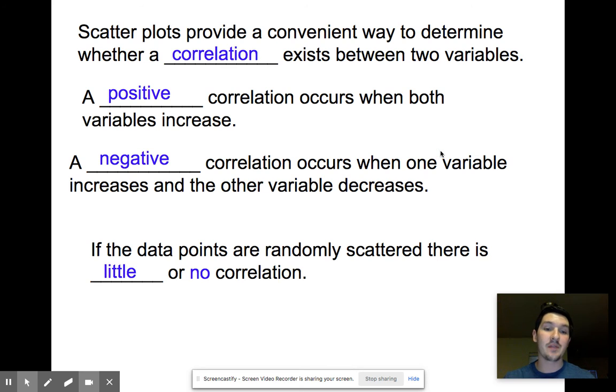And we also could have a possibility of getting a no or little-to-no correlation with your scatterplot, which means your points are just kind of scattered everywhere, and there's no connection between the two categories.